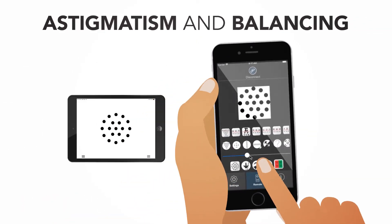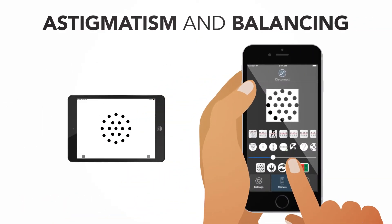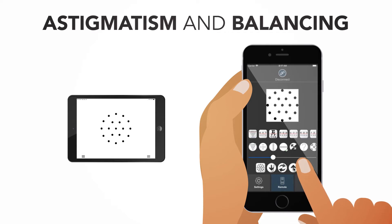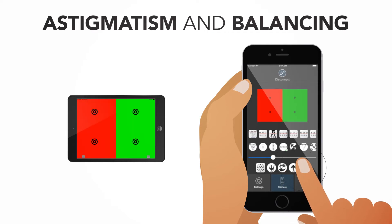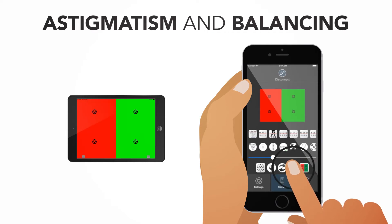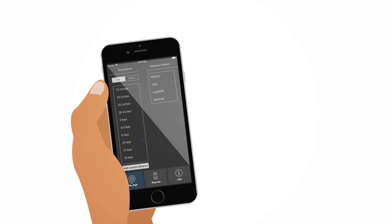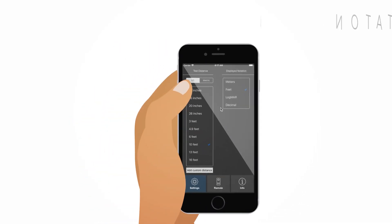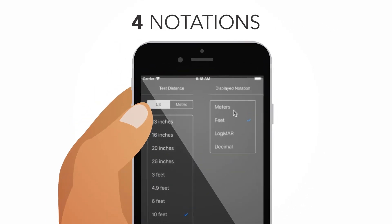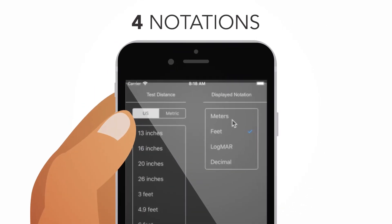Switch to the astigmatism and balancing charts to finalize your refraction. Set up your charts to display your preferred notations on the side of the chart.